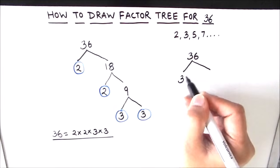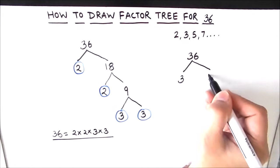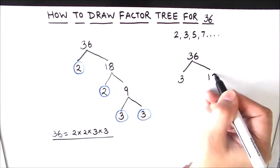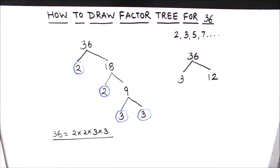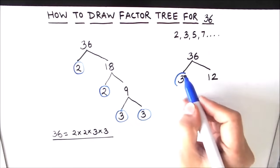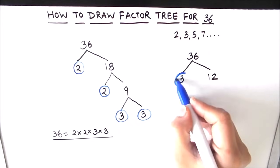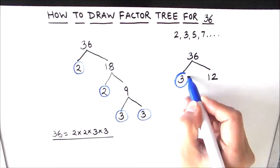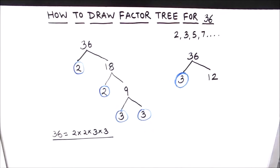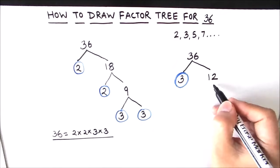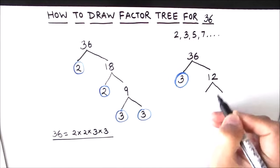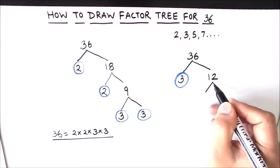Yes, 36 is divisible by 3. 3 times 12 is 36, so 3 and 12 are the two factors of 36. Since we are making a factor tree to find prime factors, we circle the prime number 3. Now, 12 can be broken down into two factors.